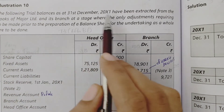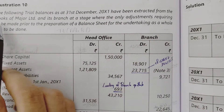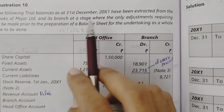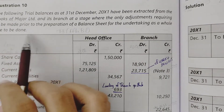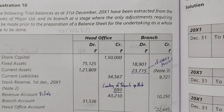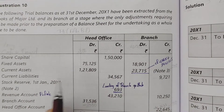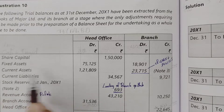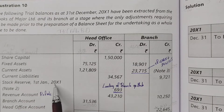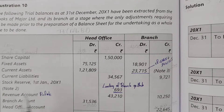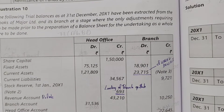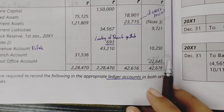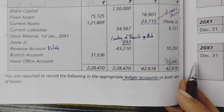The following Trial Balance as at 31 December 2011 has been extracted from the books of Major Limited and its branch, at a stage where the only adjustments required prior to the preparation of the balance sheet for the undertaking as a whole are to be made. The trial balance includes: head office, branch, share capital, fixed assets, current assets, current liabilities, stock reserve, revenue account, branch account, and head office account. You are required to record the following in the appropriate ledger accounts in both sets of books.